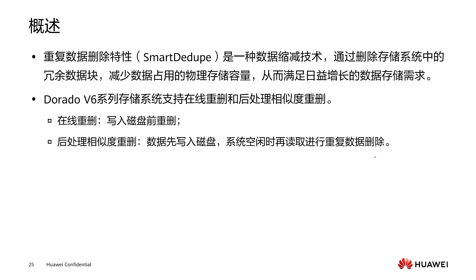Smart dedupe is a data reduction technique that eliminates redundant data blocks in our storage system, reducing the physical storage capacity occupied by this data. In Huawei's products, it supports functions like online deletion and post-processing similarity deletion.